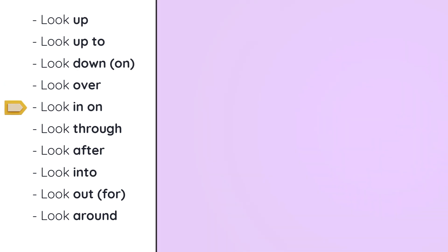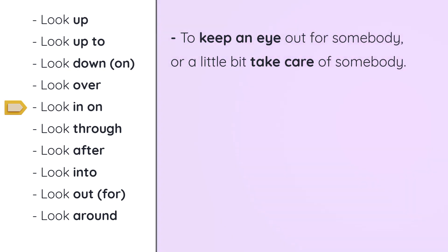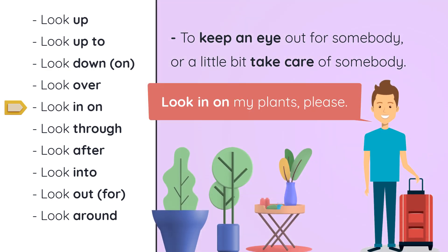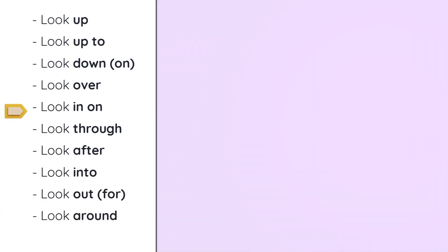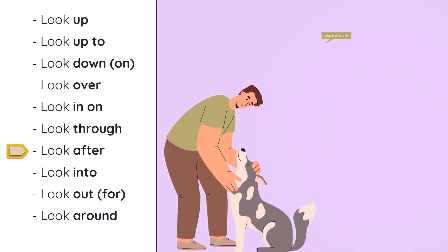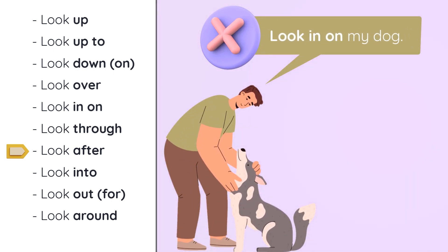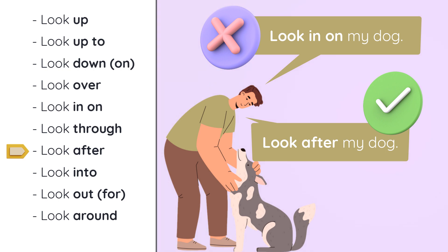Look in on means just keep an eye out for somebody, or take care of somebody a little bit. For example, I'm going away on vacation next week, so I ask my neighbor to look in on my plants — all he has to do is come in, open the door, check they're still alive. But if I have a dog, I need more than that. I need my neighbor to look after my dog. Look after means take care of.